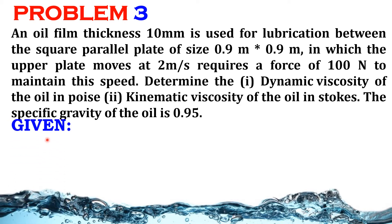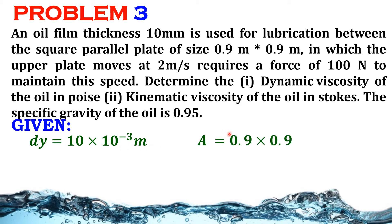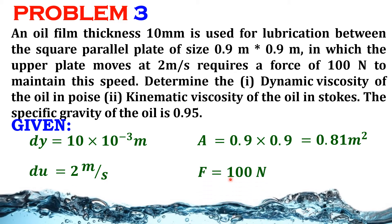Given: Instead of giving the distance between the two plates, they have given the oil film thickness. Therefore dy = 10 × 10⁻³ m. Area A = 0.9 × 0.9 = 0.81 m². Change in velocity du = 2 m/s. Force F = 100 N. Specific gravity S = 0.95.